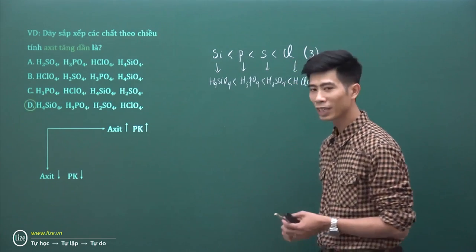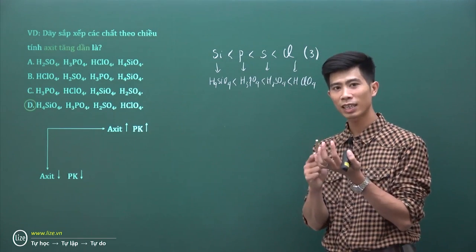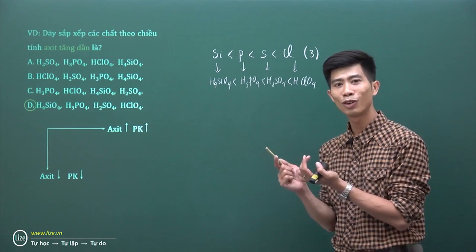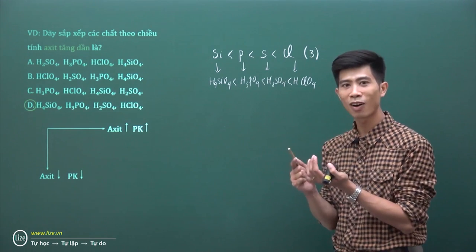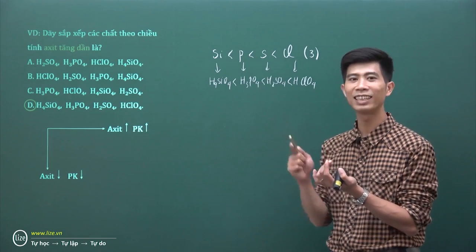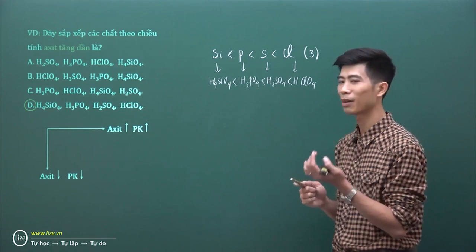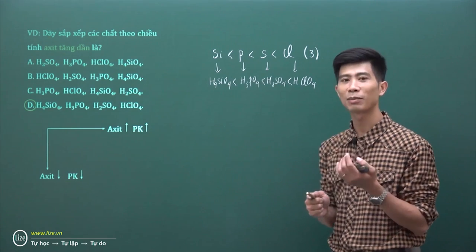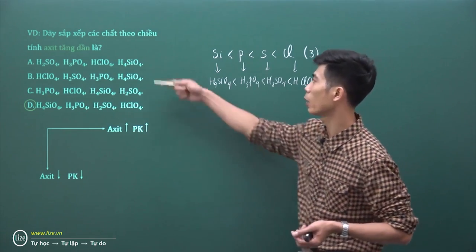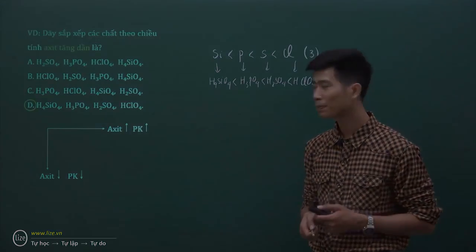Khi đi xét đến tính acid thì cứ nhớ đến tính phi kim của các nguyên tố ở trong acid đó. Còn nếu mà xét tính bazơ thì để ý đến nguyên tố kim loại, chúng ta sẽ làm rất nhanh mà không cần phải nhớ công thức của acid.